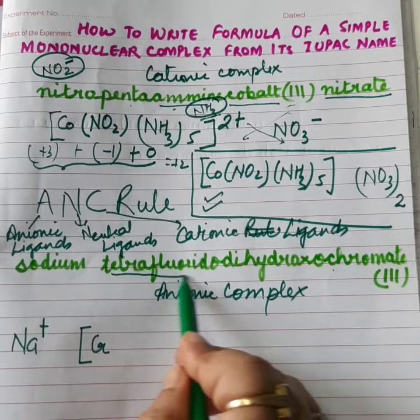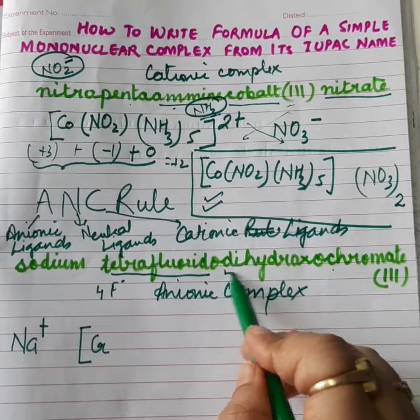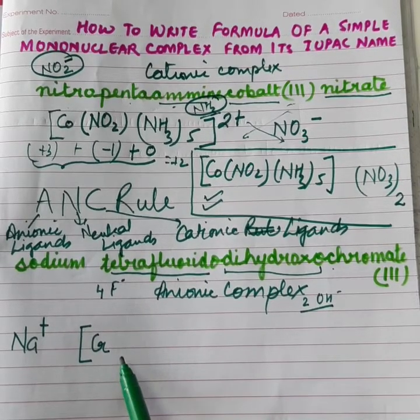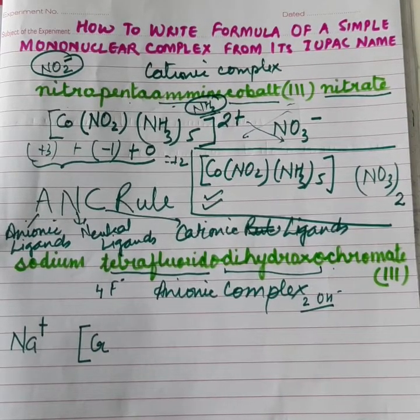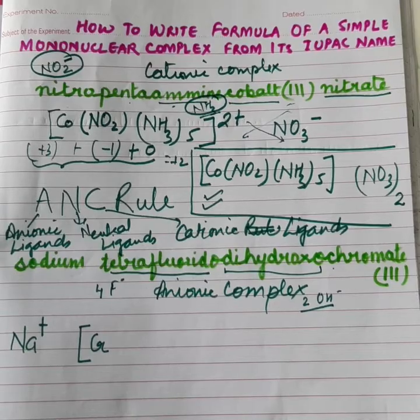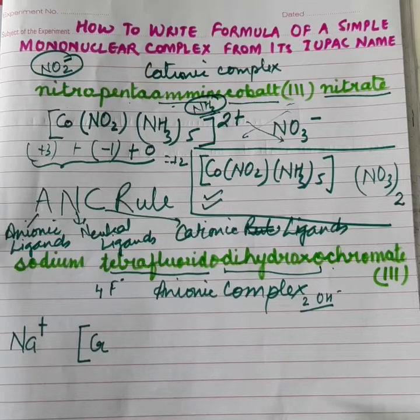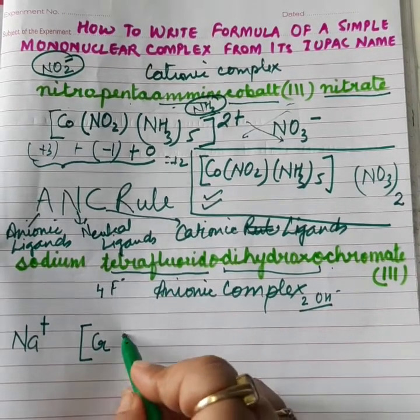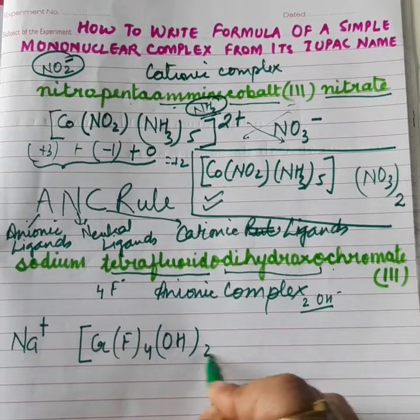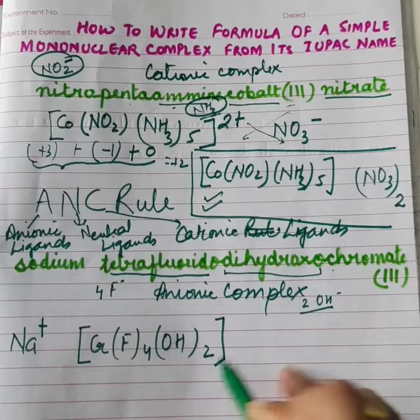Now, we will identify the ligands. One ligand is tetrafluorido - that means F- which are total 4 in number. Then, we have dihydroxo - dihydroxo means OH- which will be 2 in number. So, we will report them here. Now, here both the ligands are anionic ligands. That means we have ligands of same nature. Now, question comes which will be reported first. So, here we follow, dear students, alphabetical order. As per the alphabetical order, fluorido will be reported first. So, F4 OH whole twice. All the ligands got over. So, we will enclose this in the bracket.